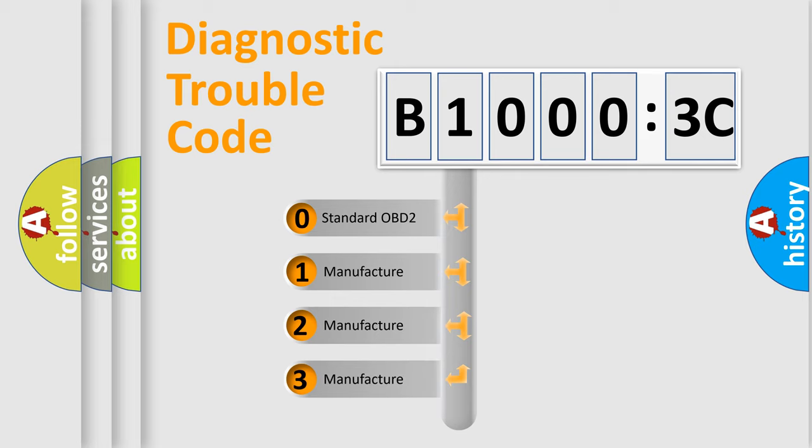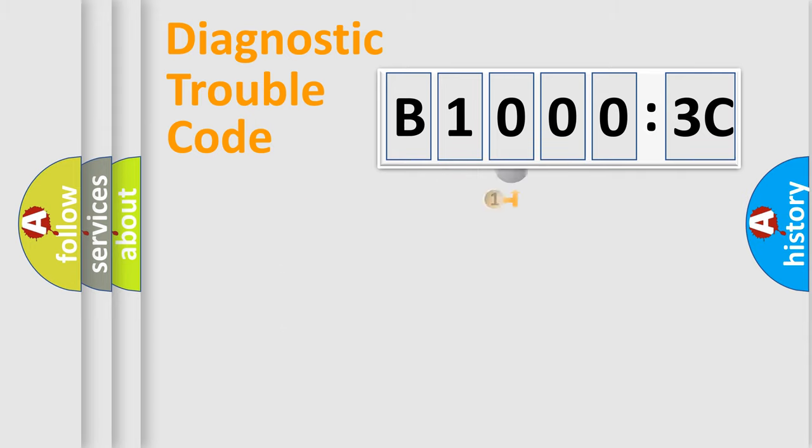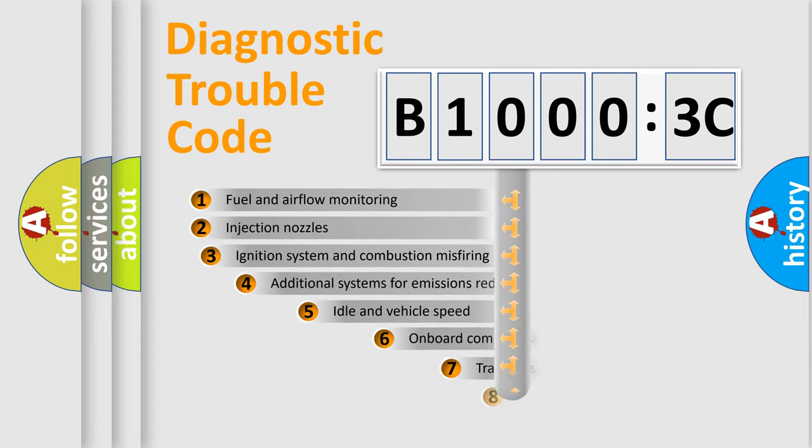If the second character is expressed as zero, it is a standardized error. In the case of numbers 1, 2, 3 it is a more prestigious expression of the car-specific error.